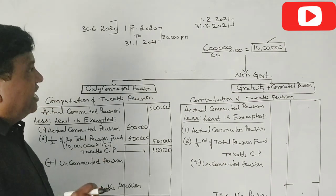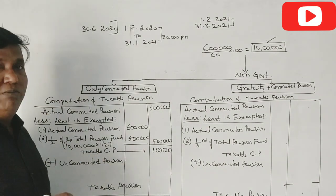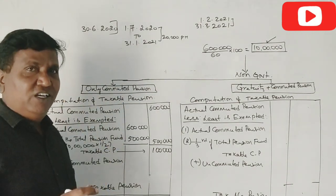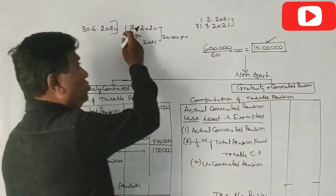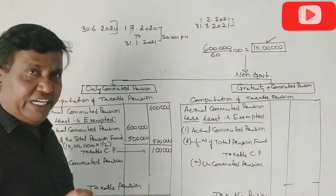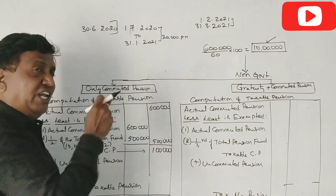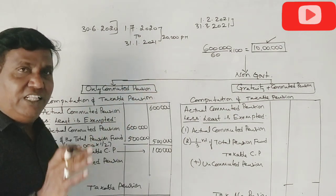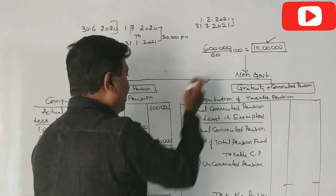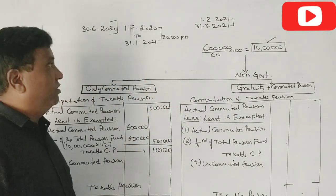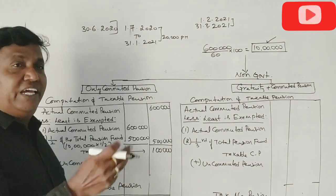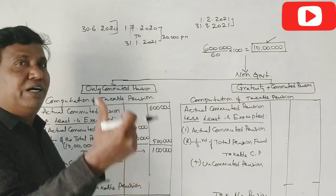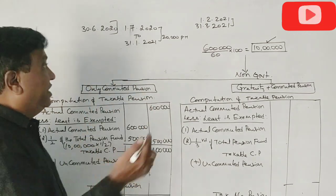Now uncommuted pension. Previous July to January 2021 - July, August, September, December, January.